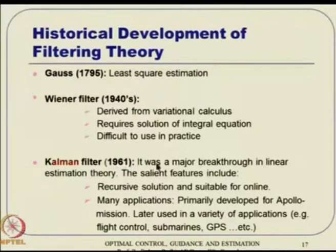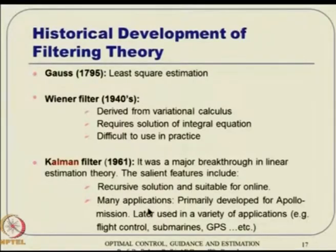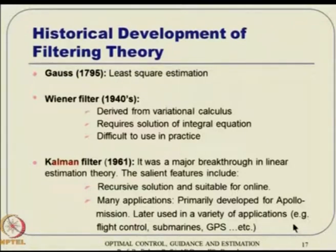Around 1961, it was a major breakthrough in linear estimation theory. Salient features include a recursive solution and suitability for online applications. Subsequently, it has been applied in almost all domains of engineering. Even though it was primarily developed during the Apollo moon landing mission at NASA, it was later used for a variety of applications: flight control, submarines, GPS, parameter estimation, system identification, automobiles, electrical applications, robotics — virtually anywhere you think about, the Kalman filter has been used.